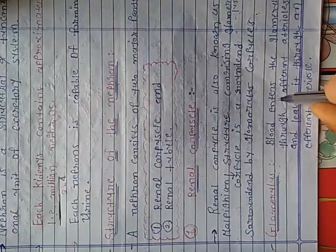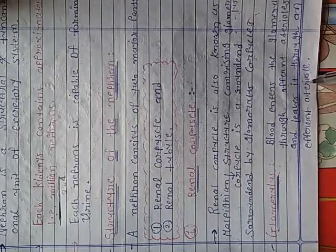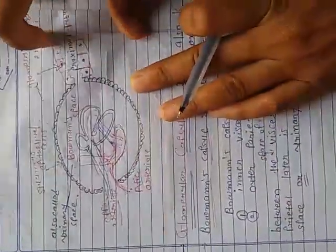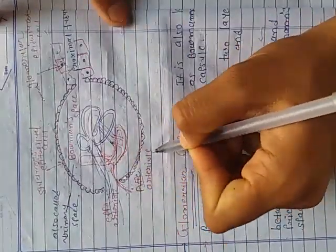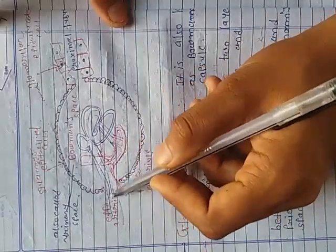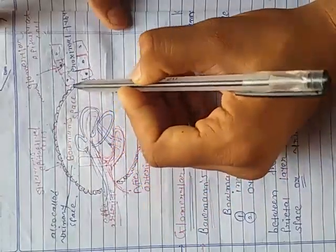Blood enters the glomerulus through the afferent arteriole and leaves through the efferent arteriole. Here is our figure - here is our afferent arteriole entering and efferent arteriole exiting. Here is our glomerulus.